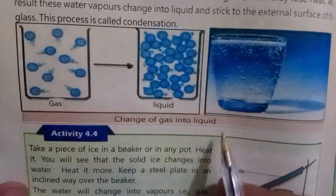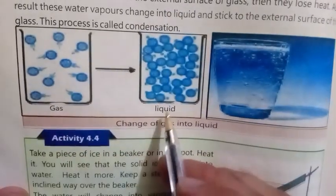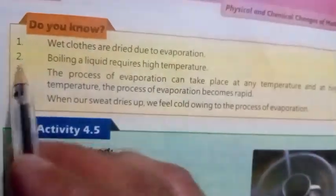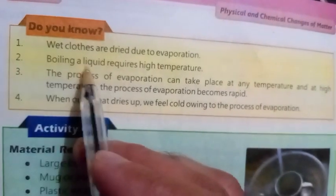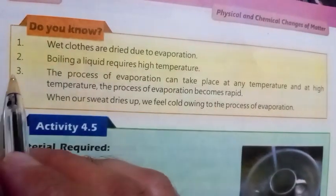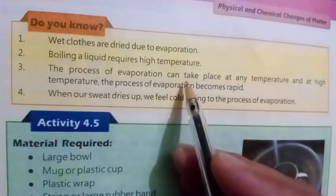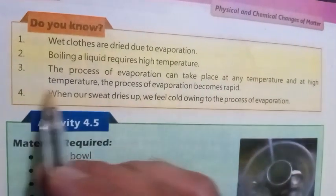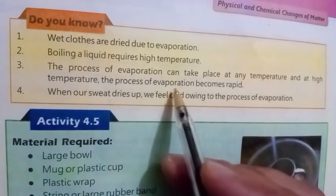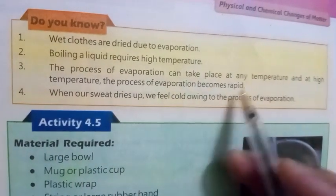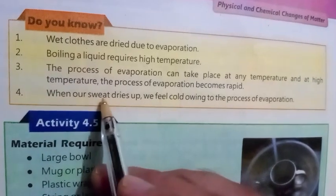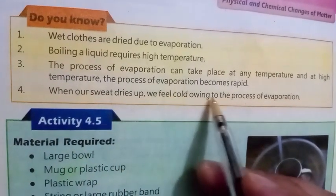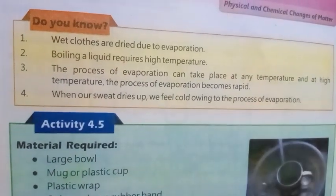Change of gas into liquid: gas → liquid. Do you know? Number one: wet clothes are dried due to evaporation. Number two: boiling a liquid requires high temperature. Number three: the process of evaporation can take place at any temperature, and at high temperature the process of evaporation becomes rapid. Number four: when our sweat dries up, we feel cold owing to the process of evaporation.